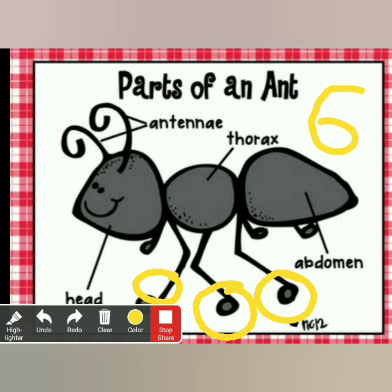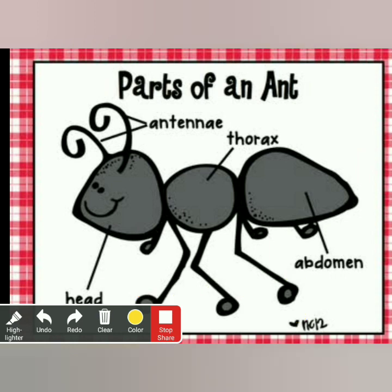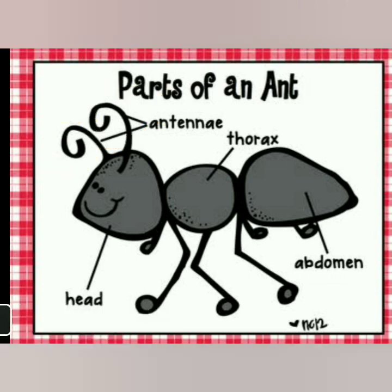They have a total of six legs. And you can see they have two antennae here on their head, like tubes. These are called antennae or feelers.